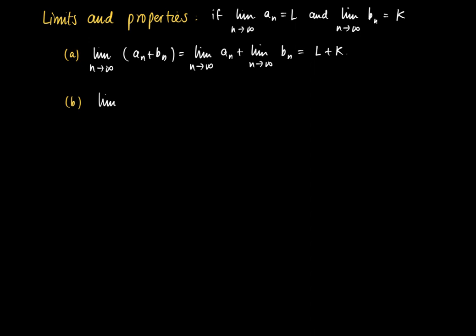Another property is that if we take a constant times a sequence, then the limit as n goes to infinity of c times a_n equals c times l. This holds for all constants c in ℝ. The intuition is of course that when a_n is close to l, then c·a_n is close to c·l.